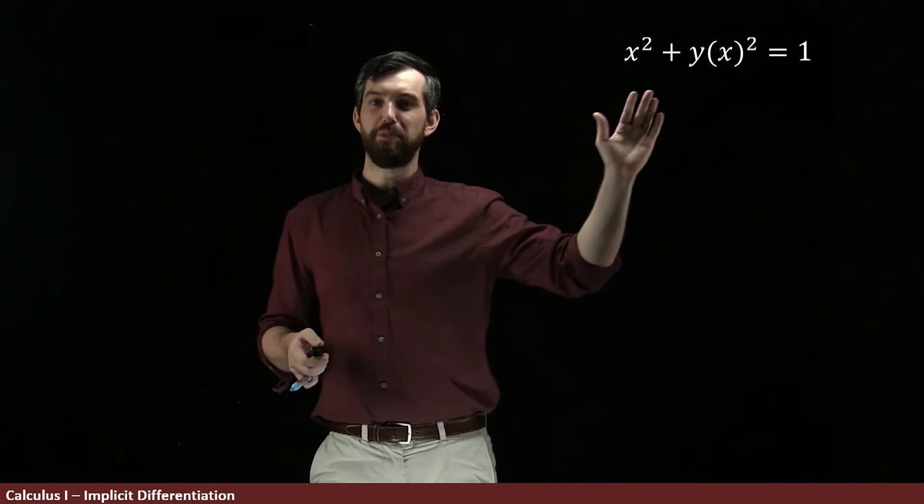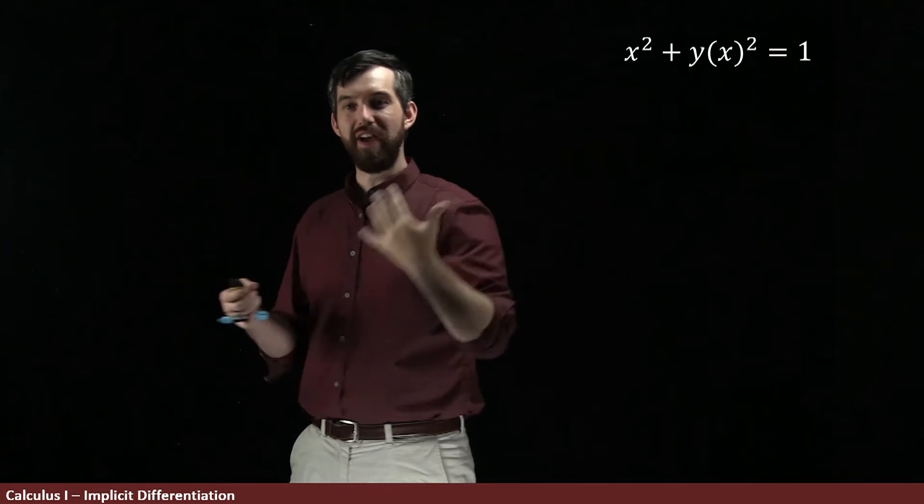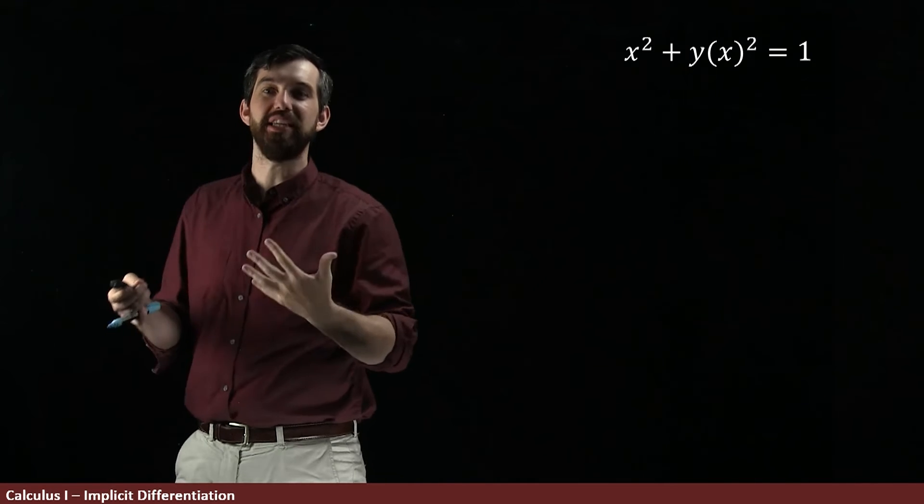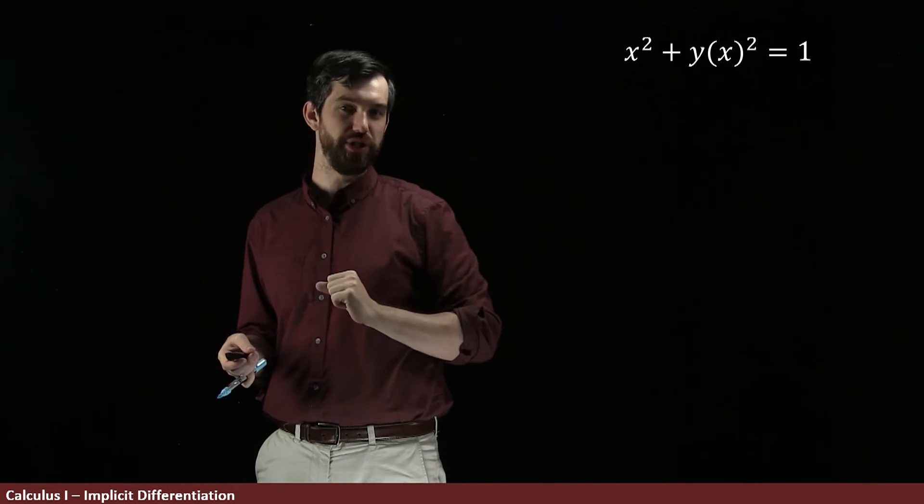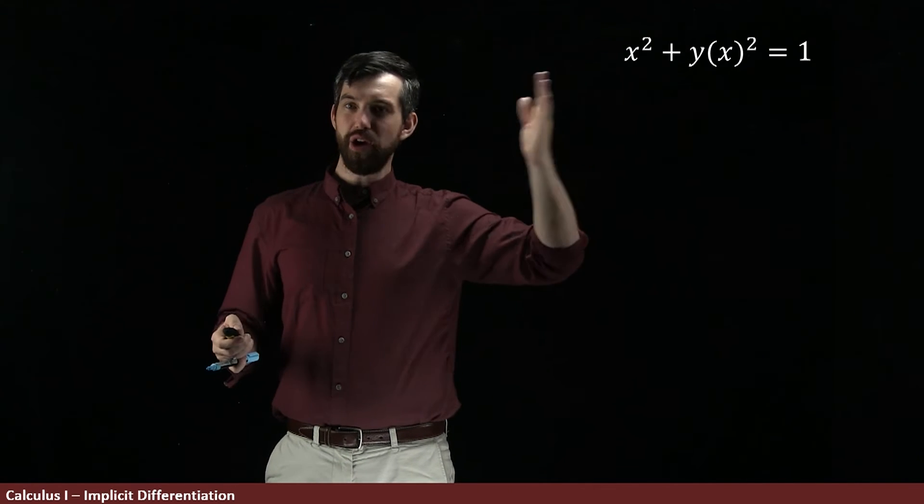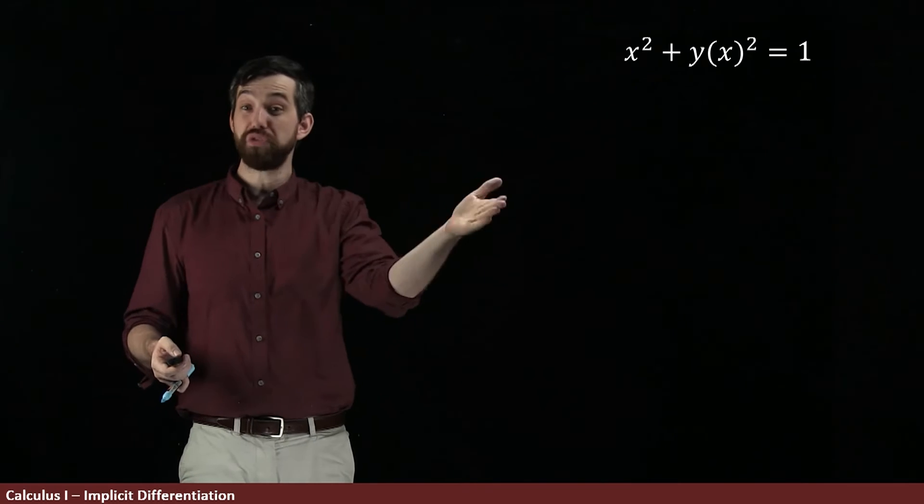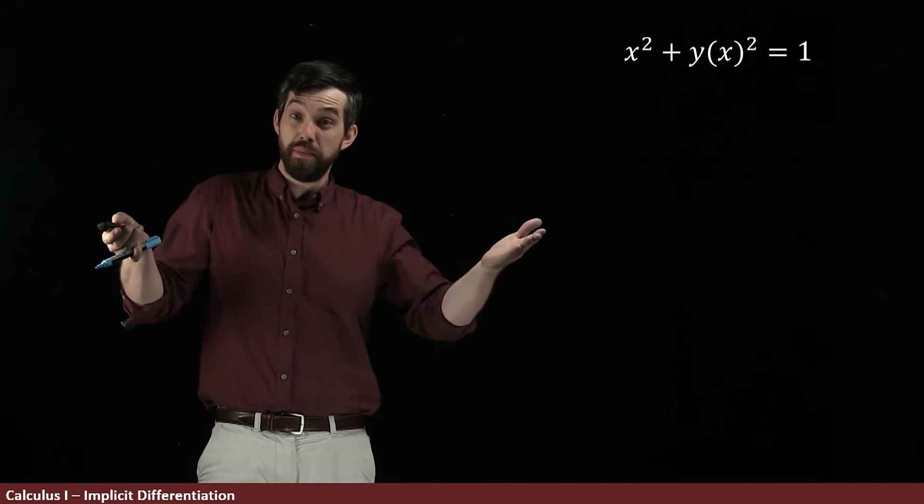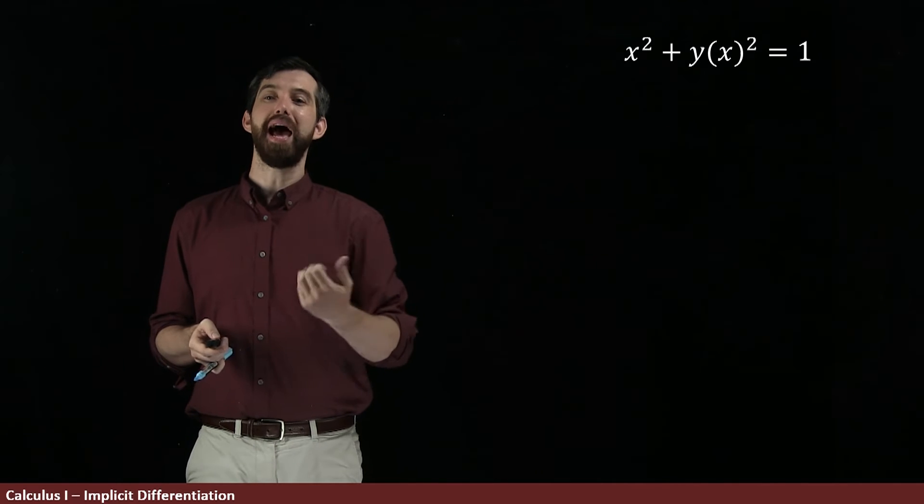But I want to have a bit more of a systematic way to compute the derivative. So the way I'm going to deal with this is I'm going to take my x squared plus y squared equal to 1. But instead of a y, I'm going to write y of x, where I'm thinking that y implicitly depends on x, even though I don't necessarily know what the actual function is. It's just some function of x. Then this is an equation. And I could take the derivative with respect to x of both sides of that equation.